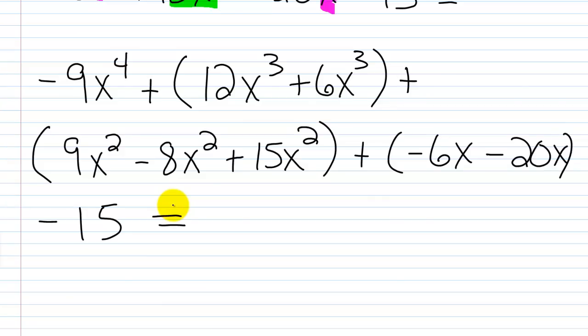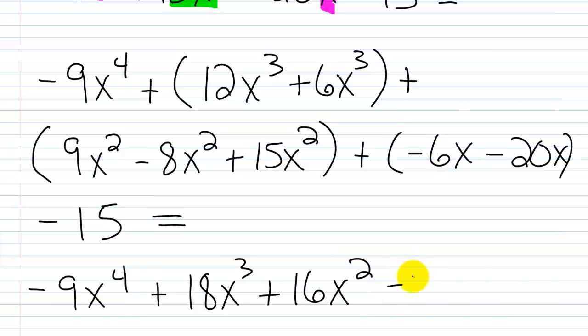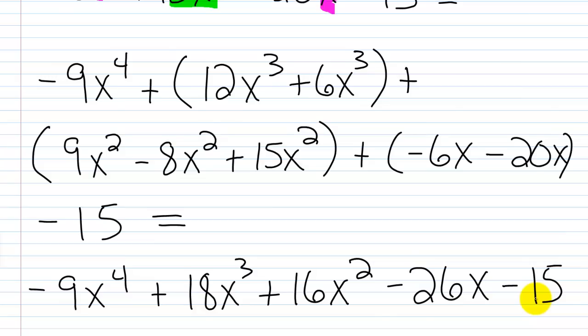So let's compute: negative 9x to the fourth stays as is. 12x cubed plus 6x cubed is 18x cubed. 9 minus 8 plus 15 is 16, so plus 16x squared. Negative 6x minus 20x is minus 26x. Then finally minus 15. So as you can see it's very tedious when you start multiplying trinomials and above together. Take your time and focus, making sure each term from the first polynomial gets multiplied by each term of the second polynomial. In Algebra 2 we'll deal with multiplying more than two polynomials together, but for right now we want to master this.